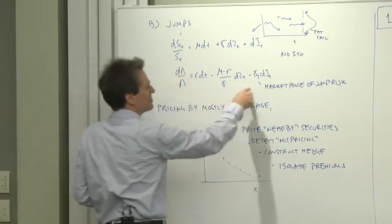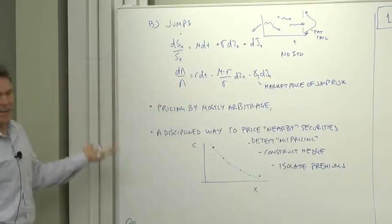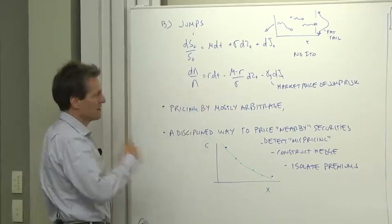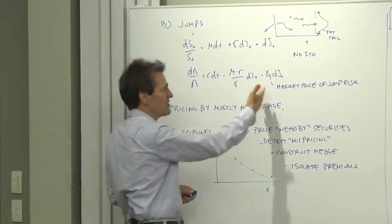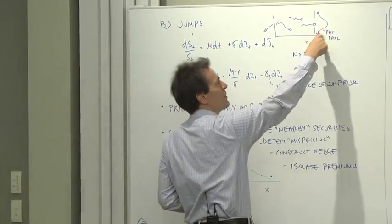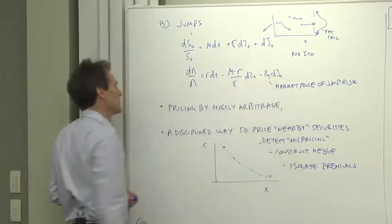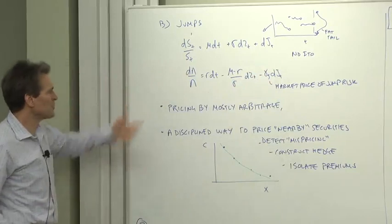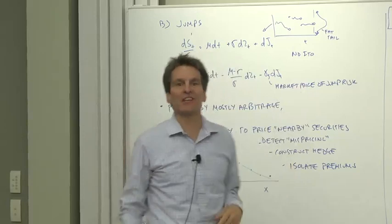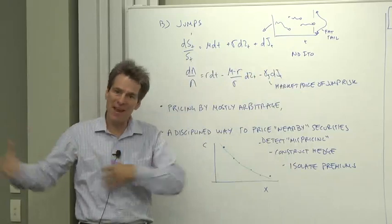We write down a discount factor that also loads on this new shock with a market price of jump risk. And you're ready to go. Same techniques that we used before, just use that discount factor, price the option. It will be a function of this new market price of jump risk. And it will include the probability of a fat left tail and risk aversion that people feel towards the fat left tail risk. So you're left with pricing by mostly arbitrage, where you will figure out the risk aversion in the model. You won't use utility functions and stuff like that. You'll figure out whatever risk aversion makes all the data fit.